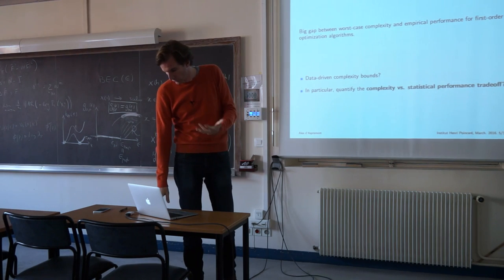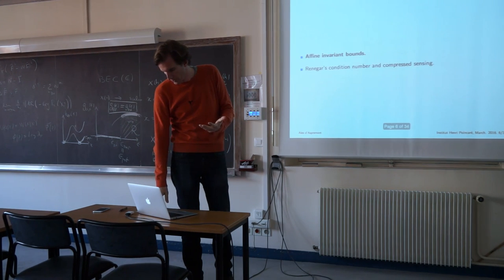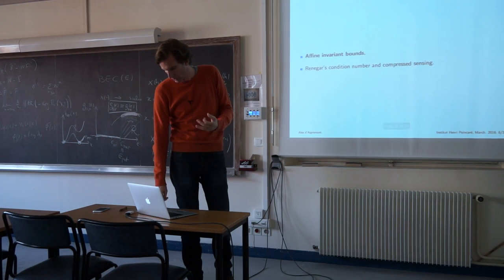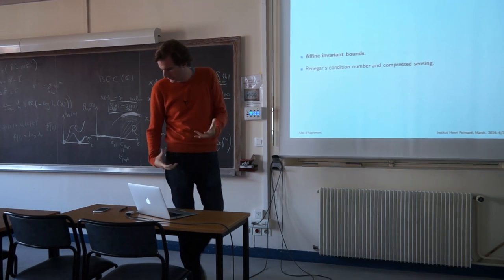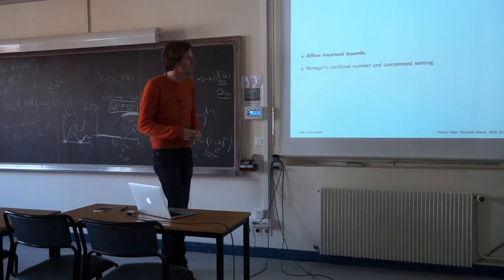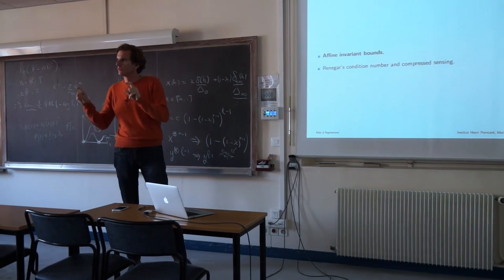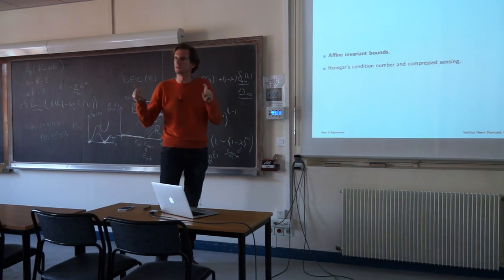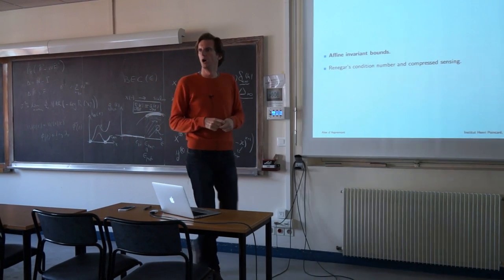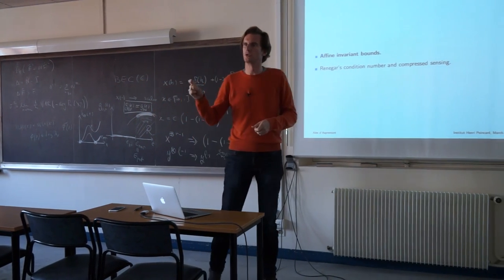We know this trade-off exists — it shows up everywhere in compressed sensing. Basically, whenever you require high statistical performance, because for example you have fewer samples, you need to make a much stronger computational investment. We have points on this trade-off curve but don't know exactly where the curve comes from. Clearly, if your problem is statistically harder, you're going to need to invest more numerical work, but we don't know where this mechanism comes from. Part of the reason is that our complexity bounds for optimization algorithms are very poorly linked to the data. This question is much too broad, so I'm going to focus on two specific questions today.